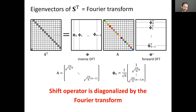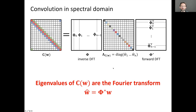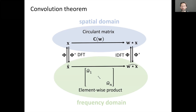The shift operator is diagonalized by the Fourier transform, and as a result any circulant matrix — any convolution — is diagonalized by the Fourier transform. The Fourier transform is essentially a multi-dimensional rotation, a change of coordinates in which convolution becomes a diagonal matrix. This gives the convolution theorem: convolution equals element-wise multiplication in the Fourier domain, then inverse Fourier transform. On graphs, the adjacency matrix generalizes the shift and enables spectral graph convolutions.